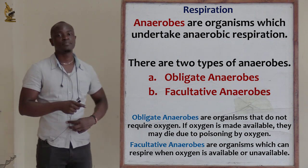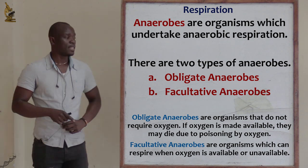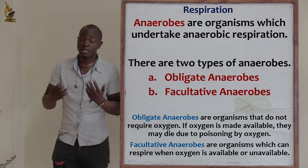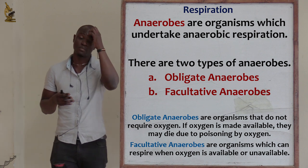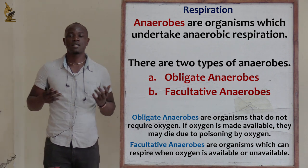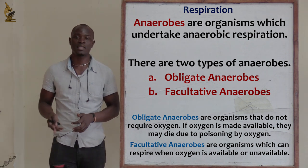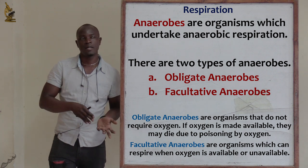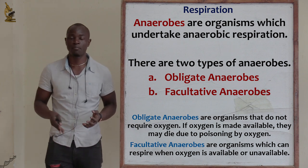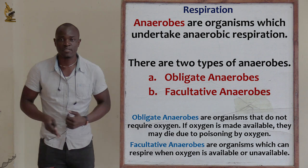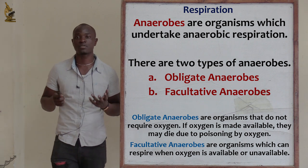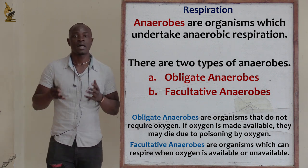The second type is facultative anaerobes. Most unicellular organisms are facultative anaerobes. These are organisms which can survive either when oxygen is made available or when oxygen is not available. In short, facultative anaerobes are organisms which can survive in either the presence or absence of oxygen.